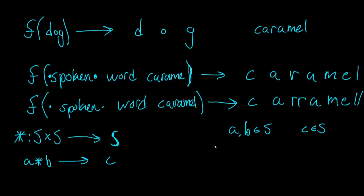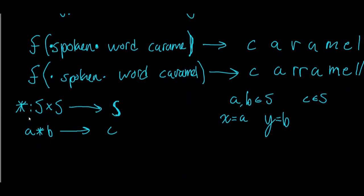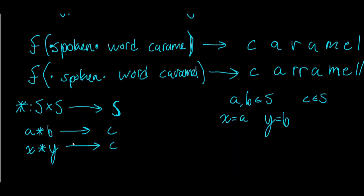Let's say X is equal to A and Y is equal to B — that is to say, X is just a different representation of the element A in S, and Y is just a different representation of the element B in S. Then, if this binary operation is well-defined, that means X star Y should also be sent to C. The different representations of the same elements should not change the output of this function. That gives us a sense of what 'well-defined' means in the context of binary operations and functions.